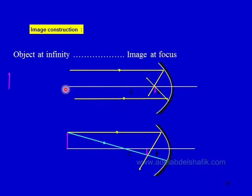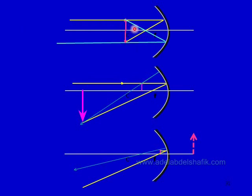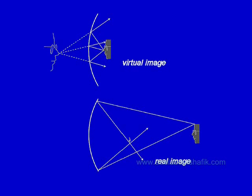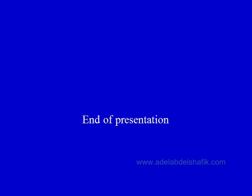To sum up: when the object is at infinity, parallel rays meet at f forming a tiny image. As the object gets closer, the image moves farther from the mirror. When the object is at c, the image is also at c and the same size. Between c and f the image is magnified. When the object is inside f, the image is virtual and cannot be captured on a screen. A real image can be captured on a screen; a virtual image cannot. Thank you for your attention.